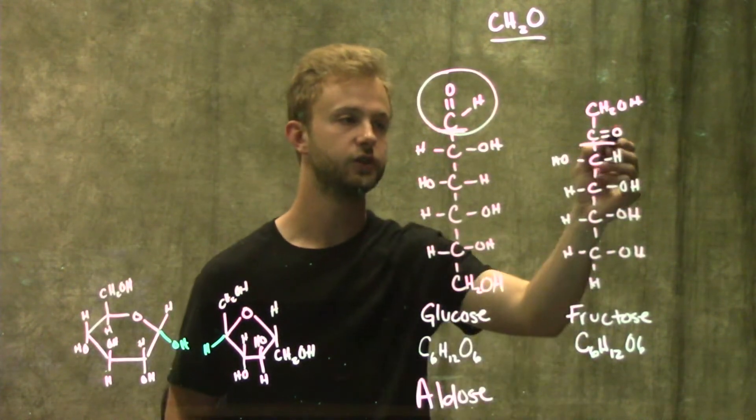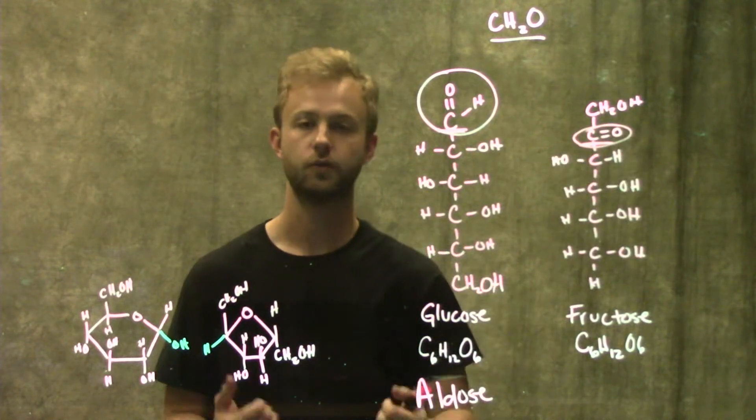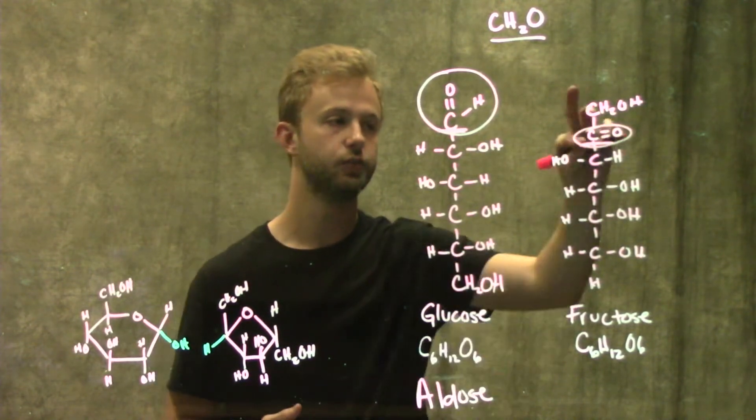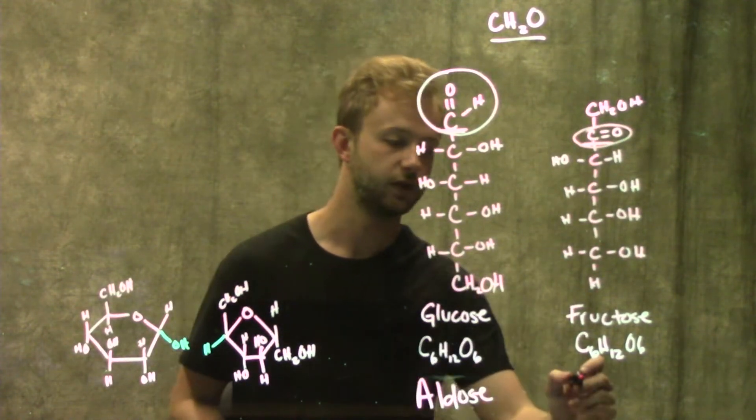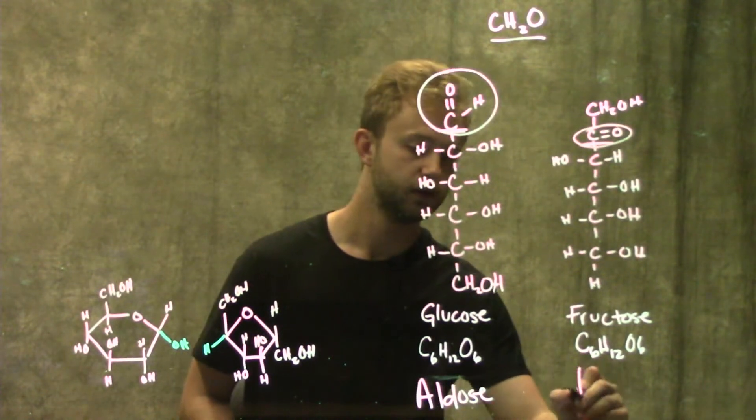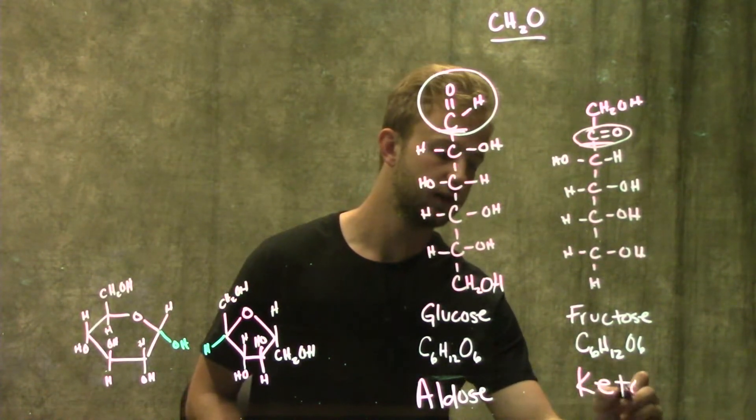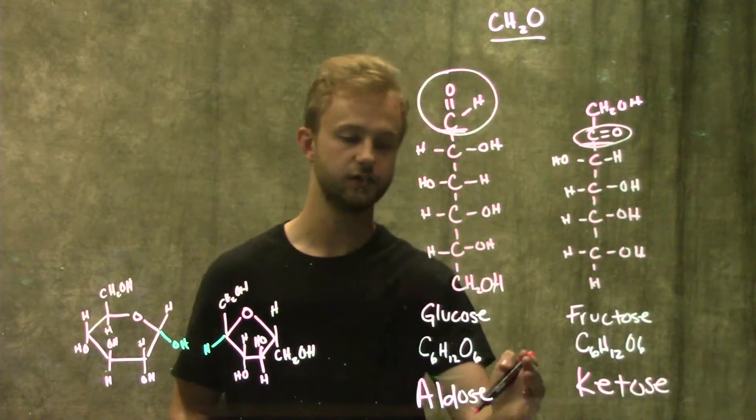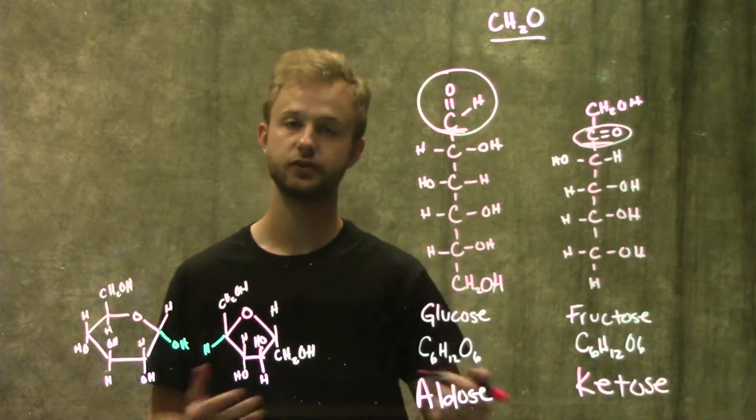Looking at fructose, this one has its carbonyl carbon right in the middle of the molecule with two other carbons on either side. That is called a ketone, which makes fructose a ketose sugar. These are the two kinds of sugars you can have, aldose and ketose.